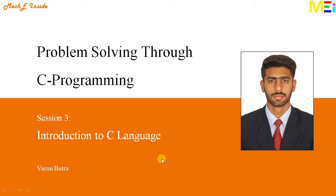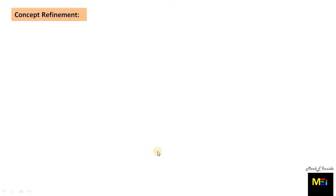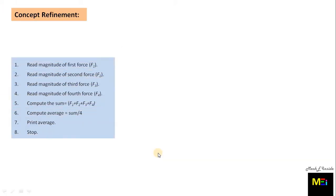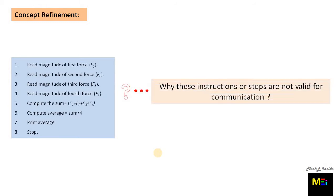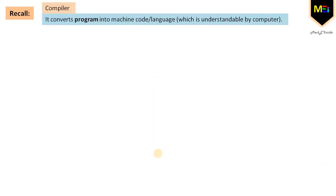As in the last session, some of you may have a doubt why these instructions or steps are not valid for communication, as there is a compiler available for translation. In order to understand this, let's recall the term compiler. A compiler converts a program into machine code or language which is understandable by a computer.